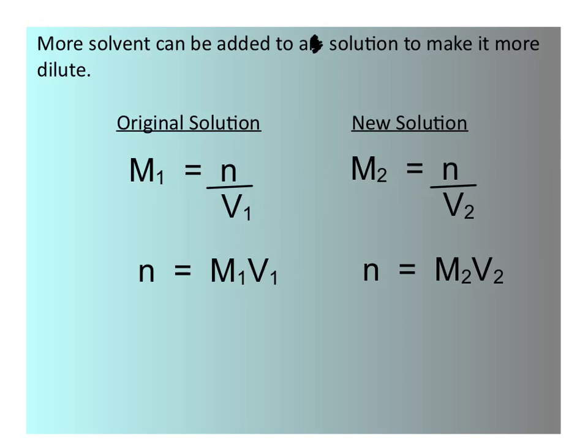So for the original solution, we have the molarity equal to the moles of solute over the volume of the solution in liters. I'm using little ones here to distinguish the original solution from the new dilute solution. That's represented here. The molarity of the new solution is equal to the moles of solute over the volume of the solution in liters.